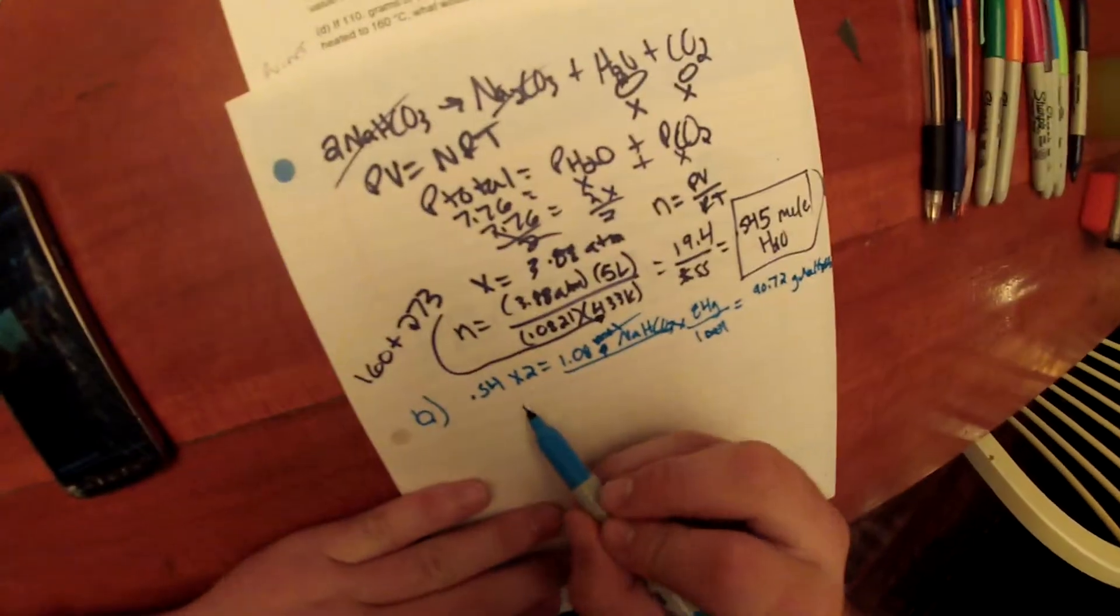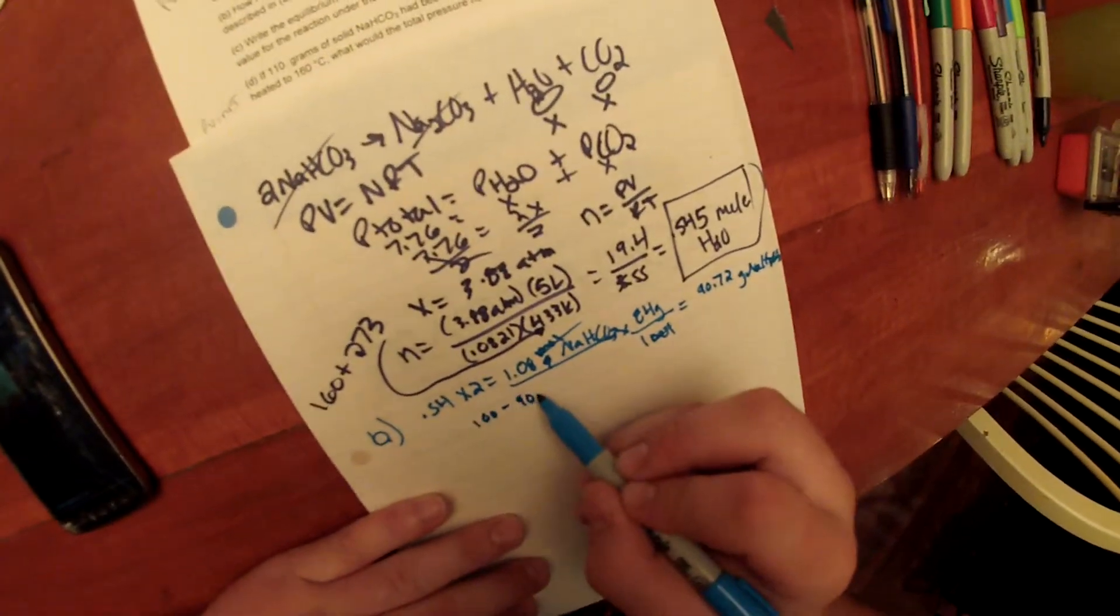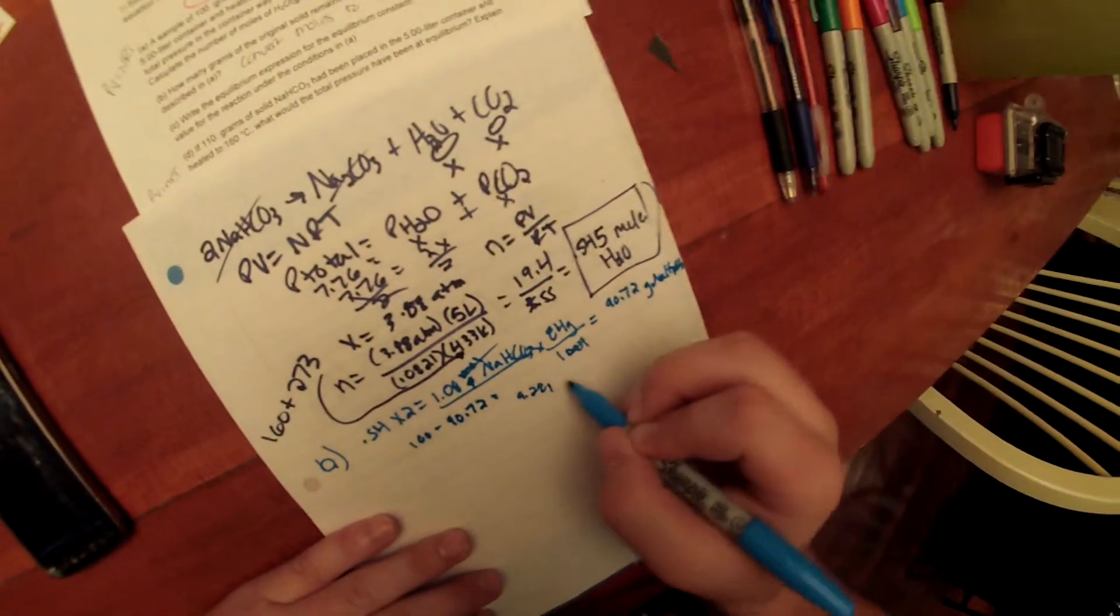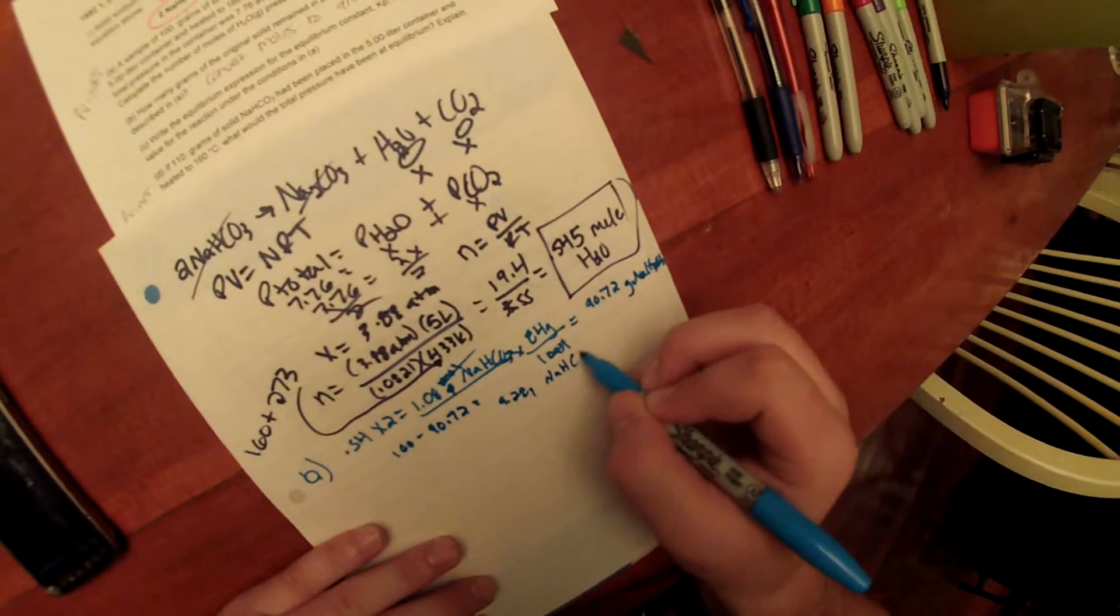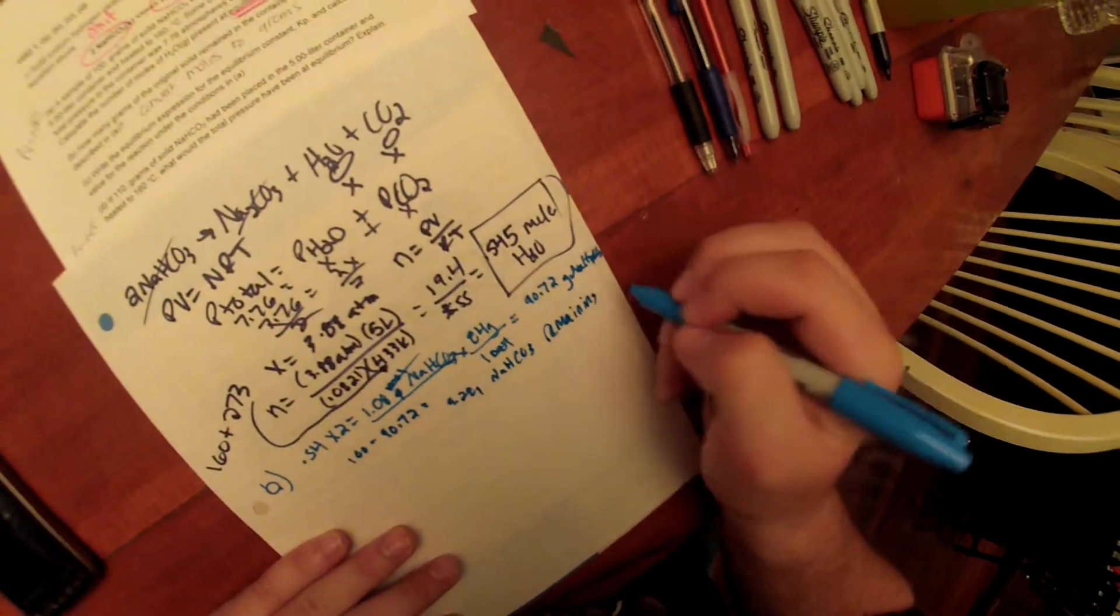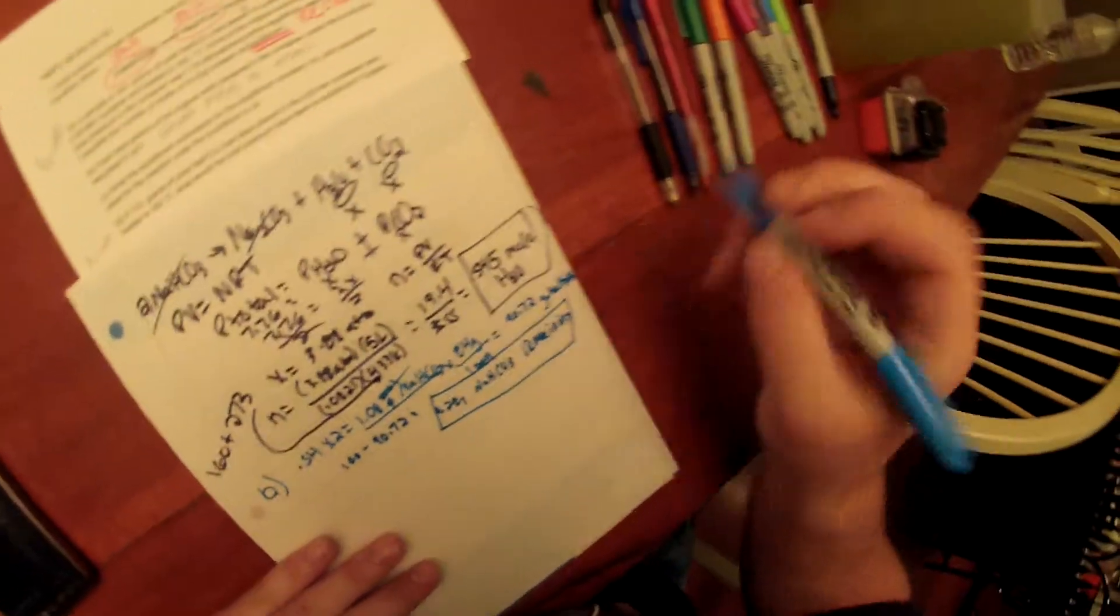We are not done because we have to find what is remaining, so we have to do 100 minus 90.72, and we are left with 9.28 grams of NaHCO3 remaining. And that's our answer for B.